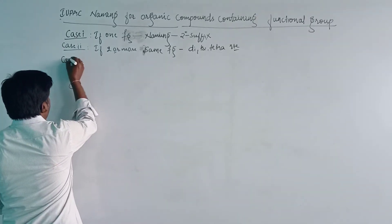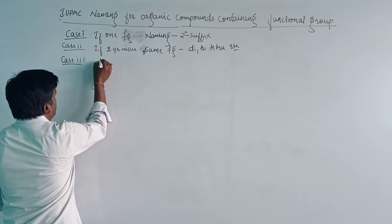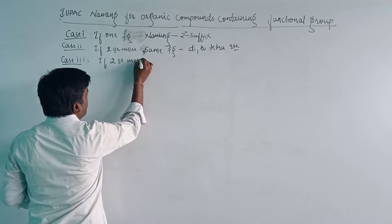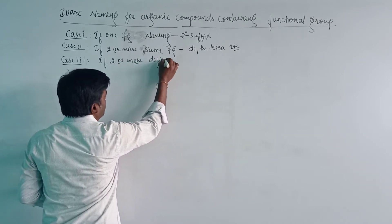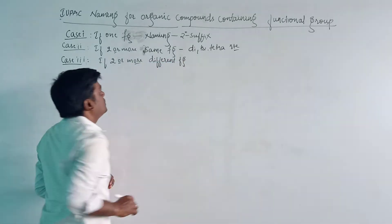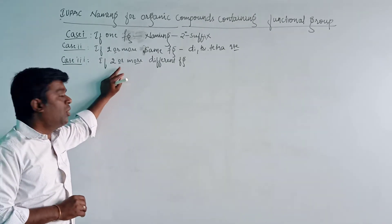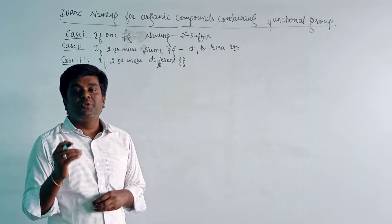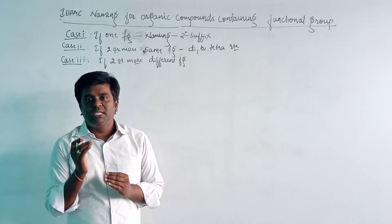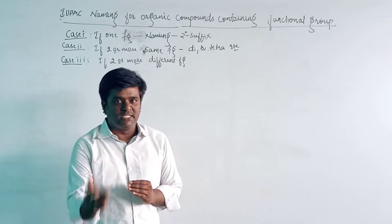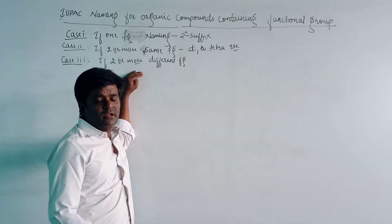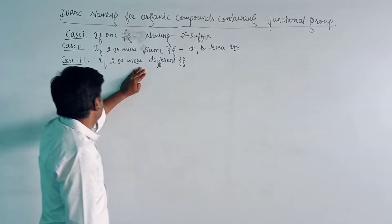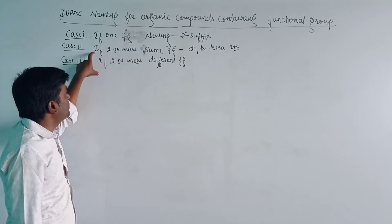Case 3: if two or more different functional groups are present, then we will follow the priority list. The priority list is a preference list that gives preference to the highest-priority functional group. We will study both these cases in this class.